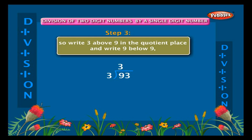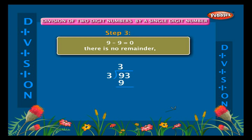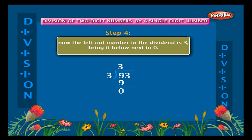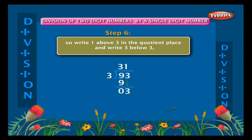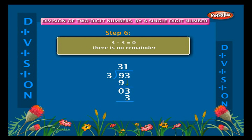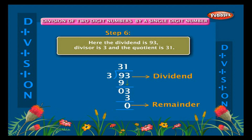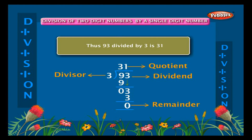Write three above nine in the quotient place and write nine below nine. Nine minus nine is equal to zero — there is no remainder. The left-out number in the dividend is three; bring it down. Recite the three tables again: three into one is equal to three, so three goes in three one time. Write one above three in the quotient place; three minus three is equal to zero, no remainder. The dividend is 93, divisor is 3, and the quotient is 31. Thus 93 divided by 3 is 31.